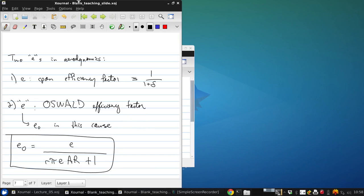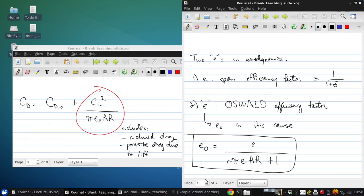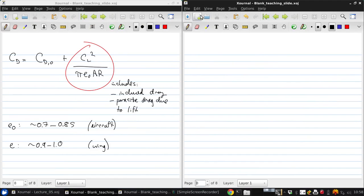Now there's an empirical expression for the Oswald Efficiency Factor, which is useful as a first pass at it. So 1.78 times 1 minus 0.045 times the aspect ratio to the power of 0.68 minus 0.64. So you can see that this is a completely empirical expression that has no basis on any physics. But based on experience, this is probably a good place to start for estimating the efficiency factor.